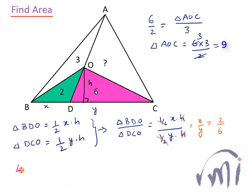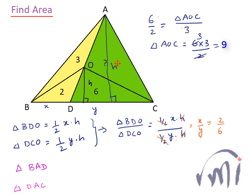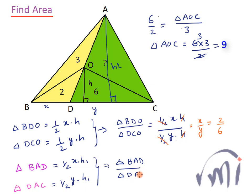Now if I consider triangle BAD and triangle DAC, both of them have the same height — let me call it H1. Their areas will be (1/2) × X × H1 and (1/2) × Y × H1. The ratio of area of triangle BAD to area of triangle DAC will also simplify to X/Y. Here the area of BAD is equal to 3 plus 2, which is 5, and the area of ADC is equal to 6 plus X.